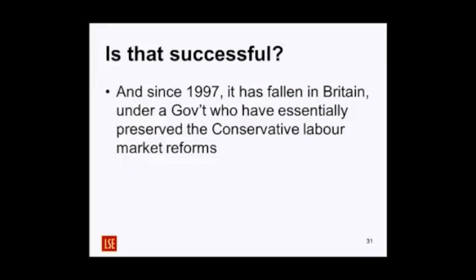After the Thatcher-Major period, the Blair government came in. In the run-up, there were lots of calls from trade unions — who heavily fund the Labour Party — for withdrawal of Conservative anti-union legislation. This didn't happen. The only significant change during the Blair-Brown period was the minimum wage. The Conservative government had removed it; Labour reinstated it after 1997. All of Thatcher's labour market flexibility policies stayed in place, and Labour continued along that trend.